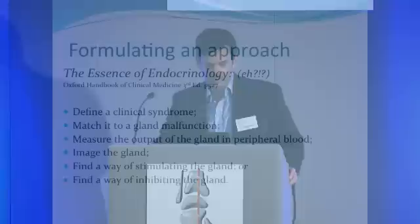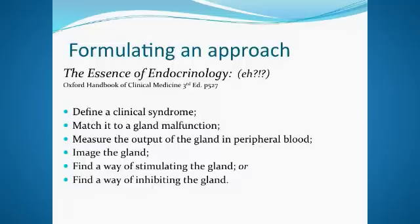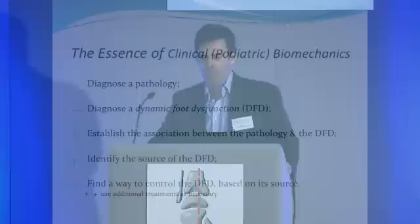Formulating an approach: the approach I use in clinical practice has its origin in the Oxford Clinical Handbook of Medicine, which I read as an undergraduate in 1993. In the chapter on endocrinology it started off with the essence of endocrinology, which basically said that all you have to do is define a clinical syndrome, match it to a gland malfunction, measure the output of that gland in peripheral blood, image the gland and either find a way of stimulating it or inhibiting it — and I immediately thought: that's biomechanics. So that led me to come up with a concept of the essence of clinical podiatric biomechanics, and many of the concepts discussed today can fit into the various different steps within that essence of clinical biomechanics.